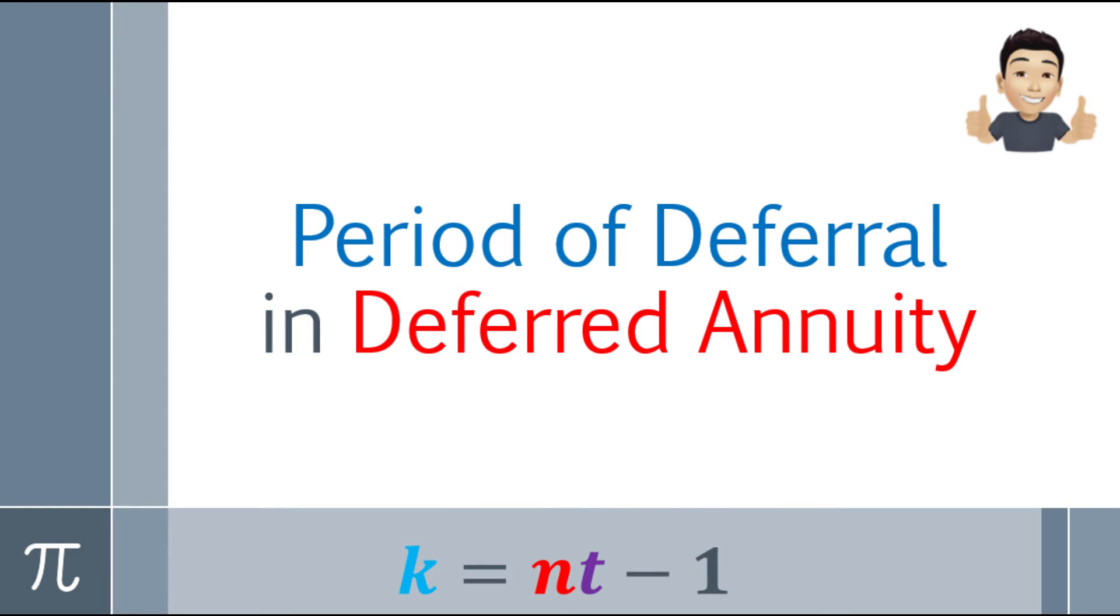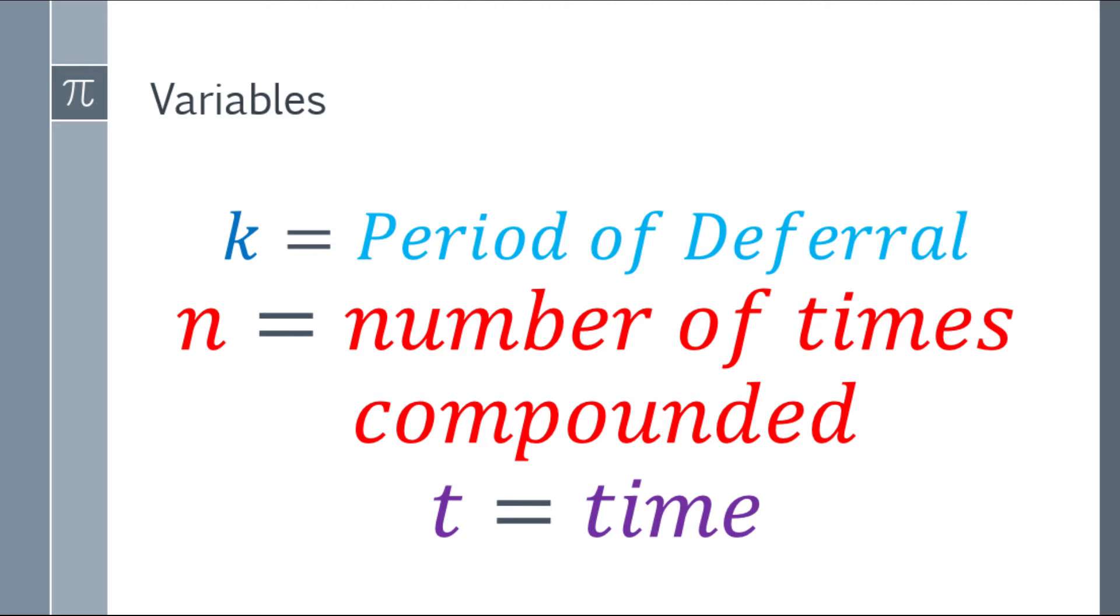Let's start with the variables. We have letter k that will be the period of deferral. Letter n is the number of times compounded or compounding frequency. And t is for the time. Always remember, the time is always based on years. Just in case the problem gives months, you should convert it to years.